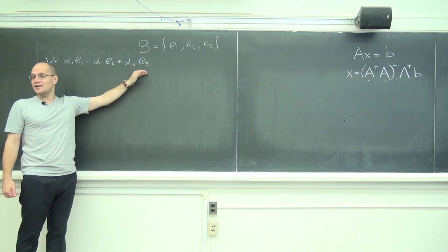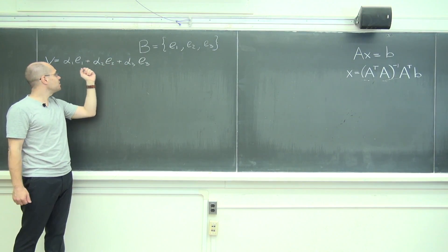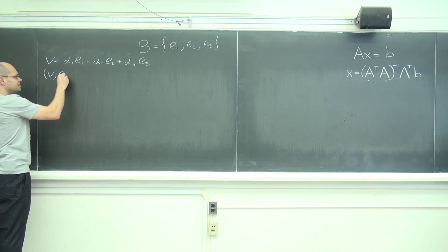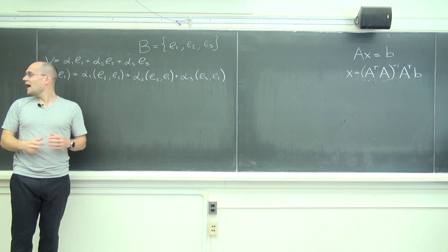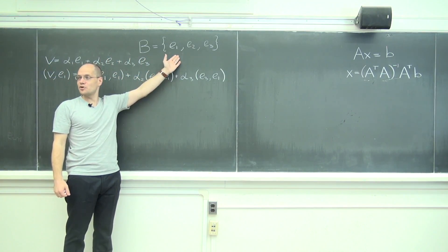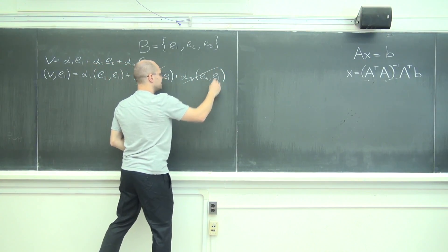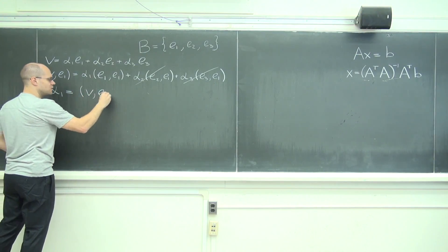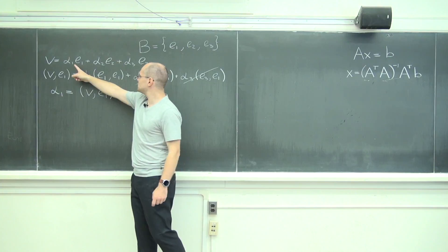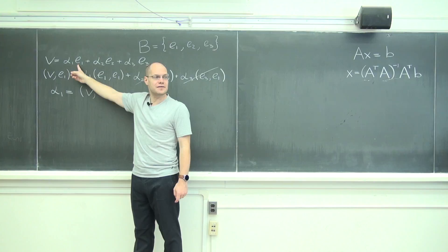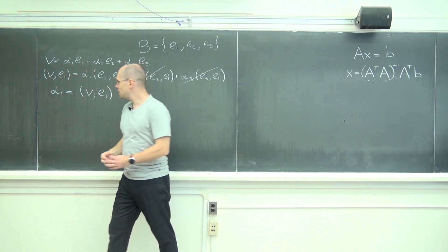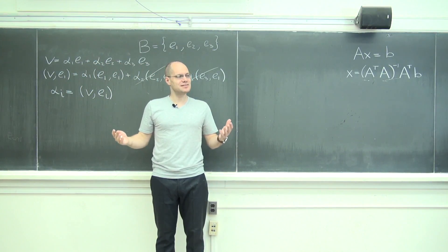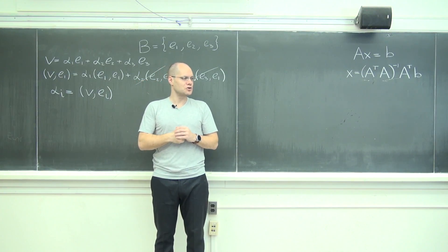Use the inner product: dot both sides with one of the basis elements. Say we're after α₁, so we dot both sides of this expression with e₁. The beautiful part is that if this basis is orthonormal, all the cross terms are zero and the e₁·e₁ term is one, so α₁ simply equals V dotted with e₁. To find the i-th coefficient, you simply dot the vector with eᵢ. How simple is that rule?